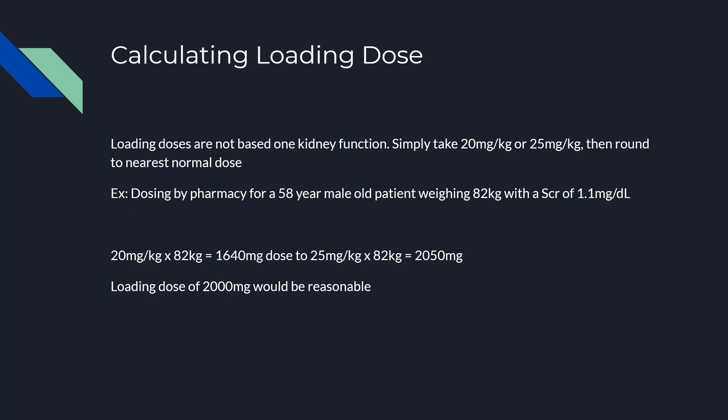Calculating the loading dose is pretty simple. Loading doses are not based on kidney function. Simply take 20 mg/kg — or maybe 25 mg/kg — and round to the nearest dose. For example, a 58-year-old male weighing 82 kg with a serum creatinine of 1.1: you don't need to worry about the serum creatinine, just focus on the weight. 20 mg/kg × 82 kg = 1,640 mg; 25 mg/kg × 82 kg = 2,050 mg. So a reasonable loading dose here would be 2,000 mg.